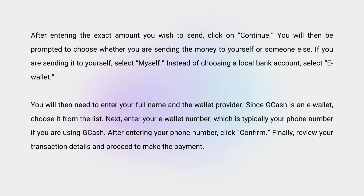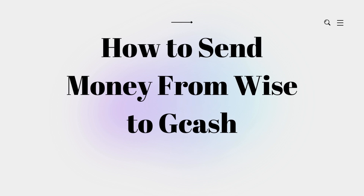Since GCash is an e-wallet, select it from the list. Next, enter your e-wallet number, which is typically your phone number if you are using GCash. After entering your phone number, click Confirm. Finally, review your transaction details and proceed to make the payment. That's it — thanks for watching! Don't forget to like, subscribe, and comment below for more tutorials.